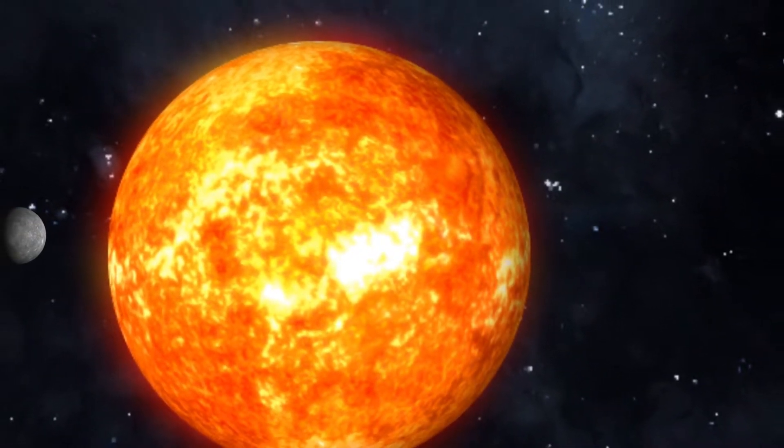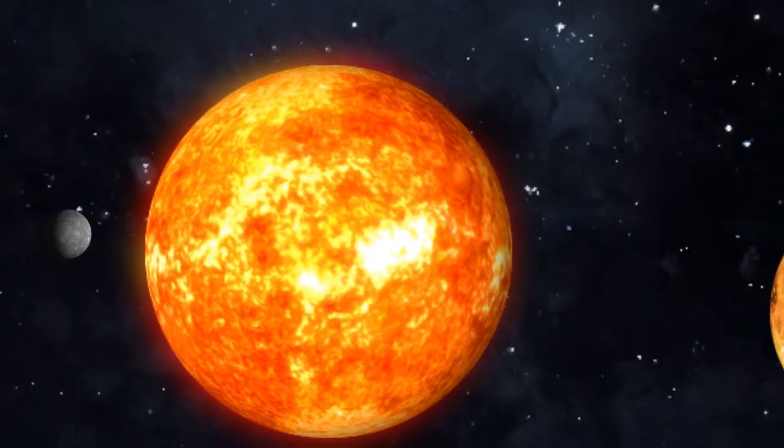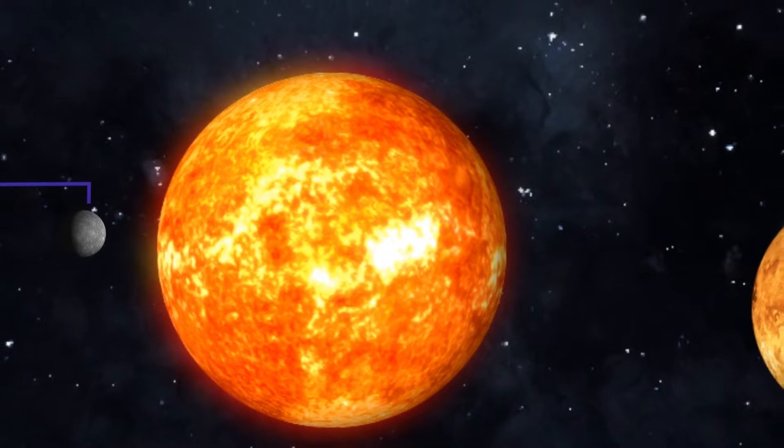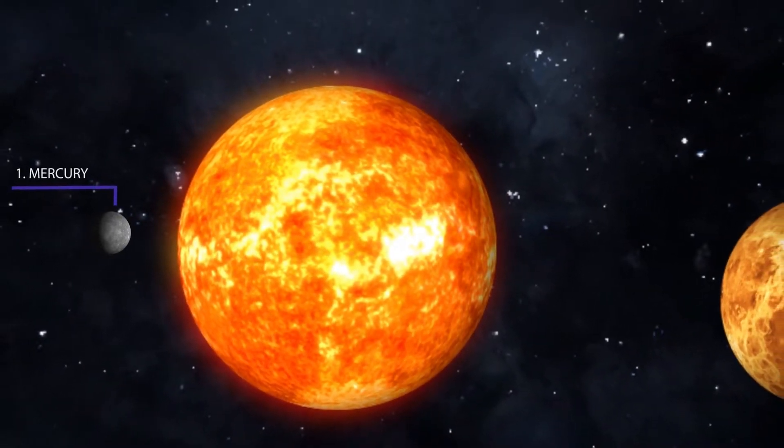The planet which orbits closest to the sun is Mercury. It is also the smallest planet in our solar system. Mercury is the fastest planet, zipping around the sun every 88 Earth days.